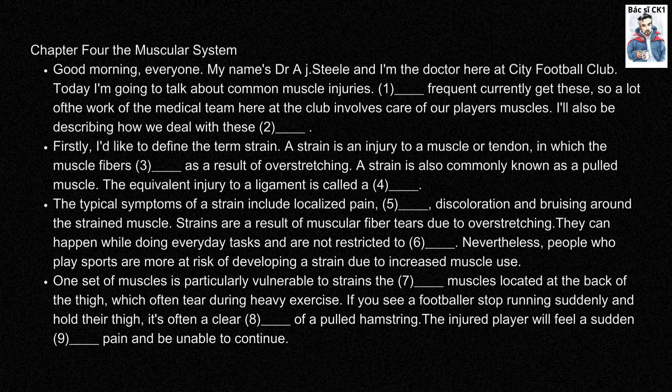Strains are a result of muscular fibre tears due to overstretching. They can happen while doing everyday tasks and are not restricted to athletes. Nevertheless, people who play sports are more at risk of developing a strain due to increased muscle use. One set of muscles is particularly vulnerable to strains: the hamstring muscles, located at the back of the thigh, which often tear during heavy exercise. If you see a footballer stop running suddenly and hold their thigh, it's often a clear indication of a pulled hamstring. The injured player will feel a sudden sharp pain and be unable to continue.